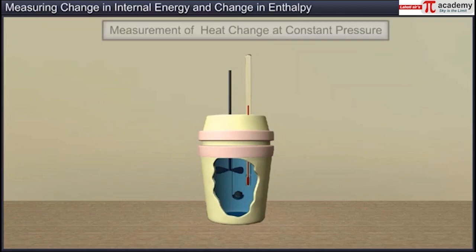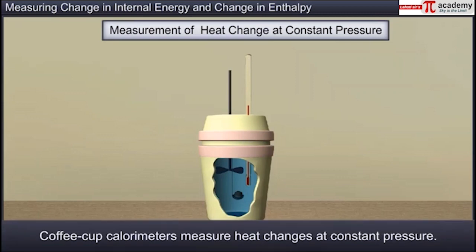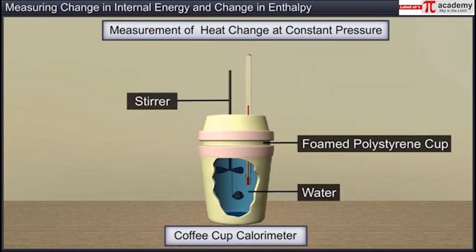Let us now measure the heat changes at constant pressure. To measure heat changes at constant pressure, a device known as a coffee cup calorimeter is used. These calorimeters are open to the atmosphere and measure heat changes at constant pressure. This calorimeter is a foam polystyrene cup partially filled with a known volume of water, fitted with a stirrer and a thermometer inserted through the lid of the cup.